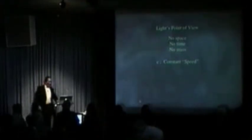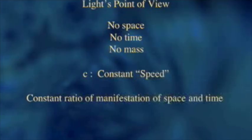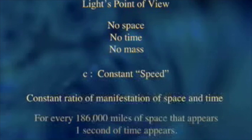And I always stretch out 186,000 miles of space for every second of time. And if I'm moving very fast, I stretch out that much. Moving slower, that much. Really slow, I stretch out that much. So, I don't think C is a speed at all. It's the constant ratio of manifestation of space and time. For every 186,000 miles of space that appears, one second of time appears.